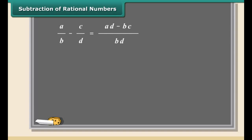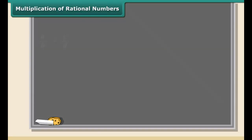Subtraction of rational numbers is the same as addition. Before subtracting, always look for the common denominator. If it's not common, multiply both parts of each number by the bottom part of the other. Here is an example of subtraction: we will subtract one by seven from five by seven. The denominators are already the same, so subtract the numerators and put the answer over the same denominator.